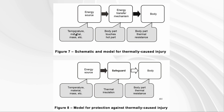When it comes to thermal burn, this is the three-block model that the IEC standard shows us. High temperature energy is transferred to the body — that's where the hazard comes from. A body part such as a finger touches a hot part, and the body part has thermal resistance, so the skin is going to get a burn. There is a model for protection against this kind of injury which involves putting a safeguard between the energy source and the body.